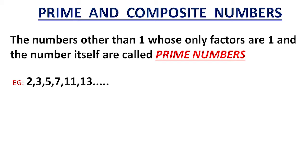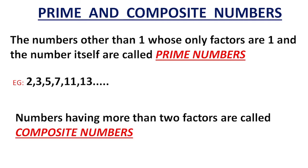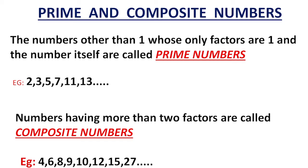Composite numbers have more than 2 factors. 4 is a composite number. 6 is a composite number. 8 is a composite number. 9 is a composite number, because 1 times 9 is 9 and 3 times 3 is 9 — in the 1's, 3's, and 9's tables we can find 9. So 9 is a composite number.